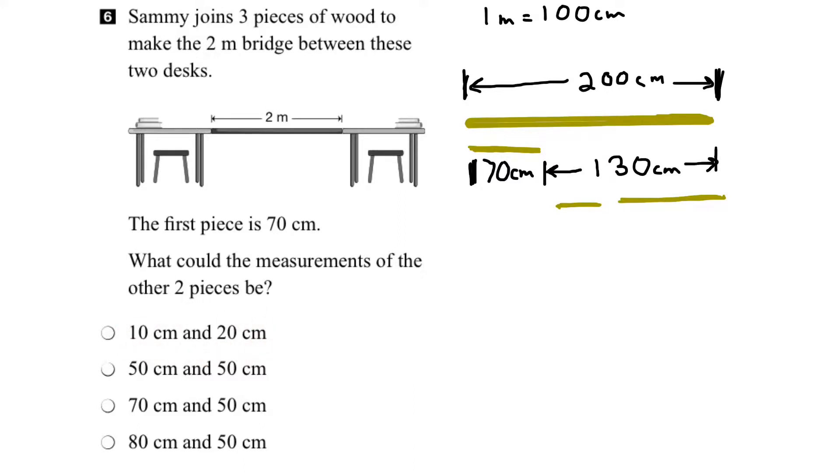Okay, let's start with the first pair. This means 10 centimeters, and it means plus 20 centimeters, would add up to 30 centimeters. Well, that's not 130 centimeters. So we know that the first option is incorrect.